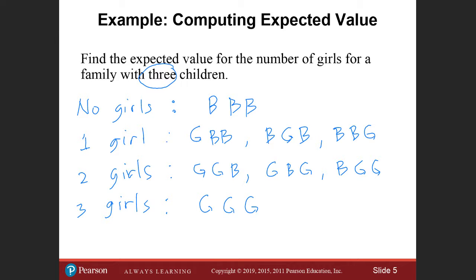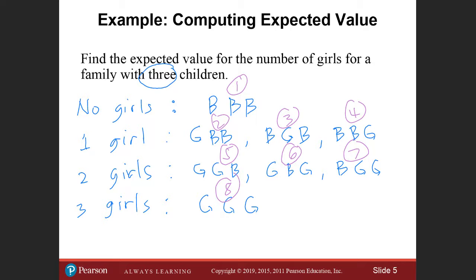Counting all possible outcomes: first, second, third, fourth, fifth, sixth, seventh, and eighth — we have eight possible outcomes. The expected value E is computed by multiplying each outcome by its probability and then adding the products.